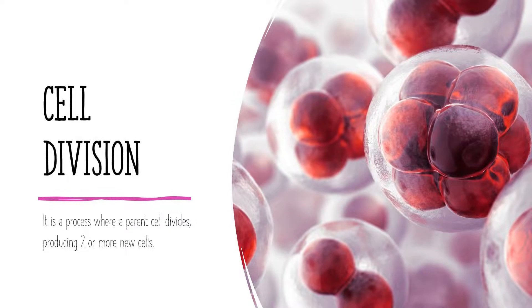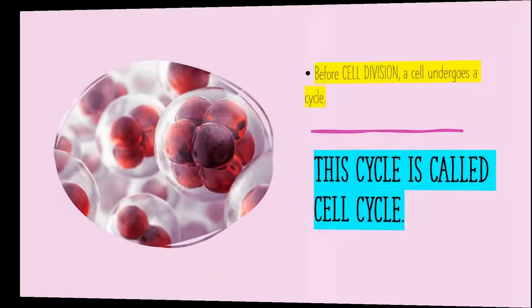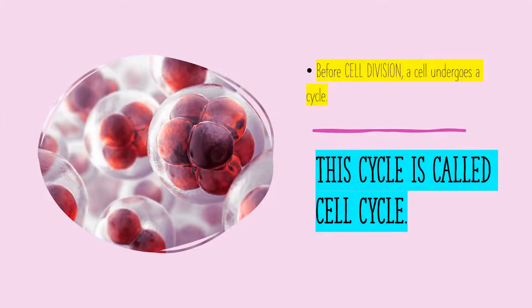Cell division is a process where a parent cell divides producing two or more new cells. Before cell division, a cell undergoes a cycle. This cycle is called the cell cycle.